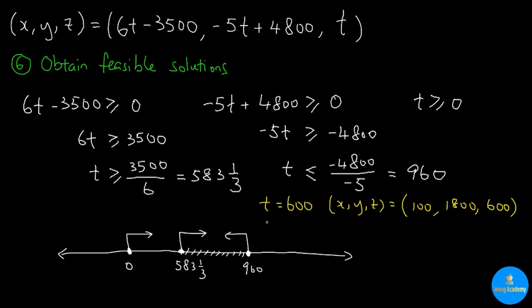Another possible value for t could be 700. If we plug in 700 into every t that you see here, our x, y, and z will become 700, 1,300, and 700. These two solutions indicate that in order to attain the required mineral level, the farmer could buy 100 bags of fertilizer 1, 1,800 bags of fertilizer 2, and 600 bags of fertilizer 3, or they could buy 700 bags of fertilizer 1, 1,300 bags of fertilizer 2, and 700 bags of fertilizer 3. These are the final solutions to this word problem involving system of linear equations.